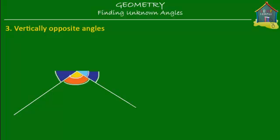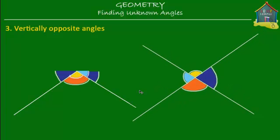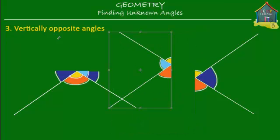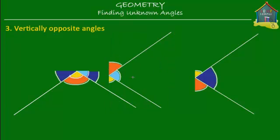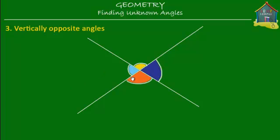How about the light blue and dark blue? I take another copy, cut the light blue, paste it, and rotate it. Does it fit into the dark blue? It does. So there's another pair of vertically opposite angles that are equal. Going back to the original figure, we saw that angle A equals angle B, forming one set of vertically opposite angles, and angle C equals angle D, forming another pair.